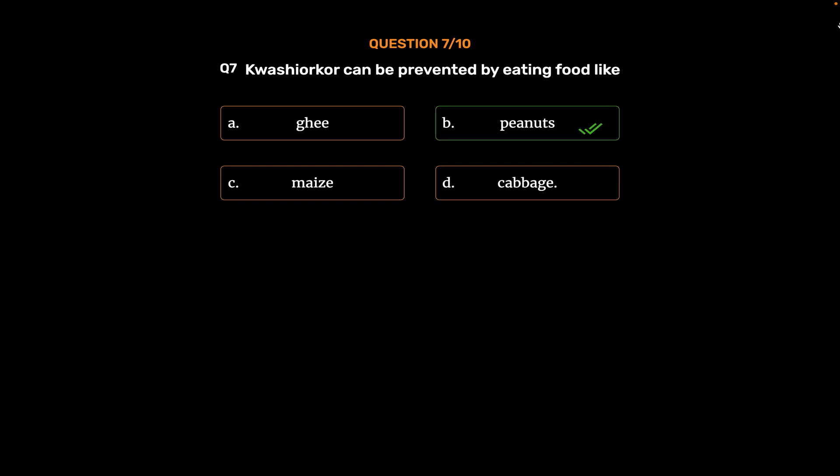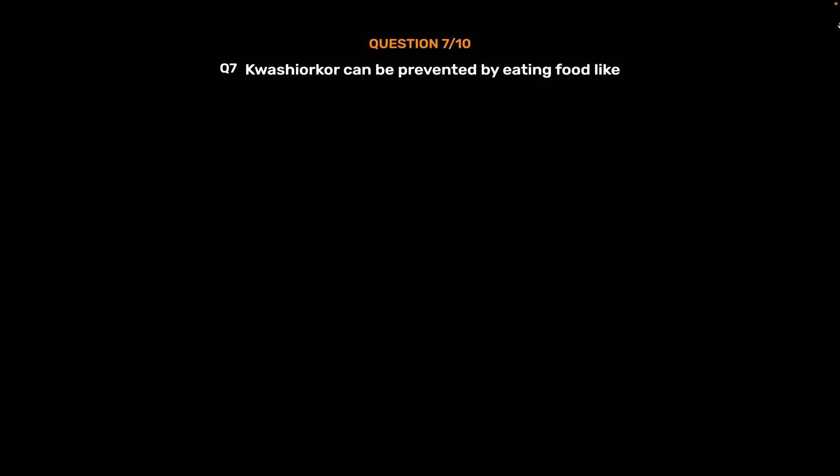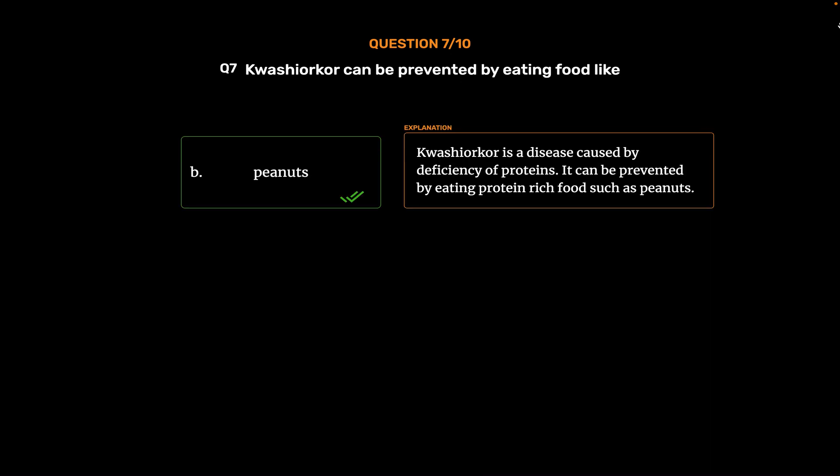Option B: Peanuts. Kwashiorkor is a disease caused by deficiency of proteins. It can be prevented by eating protein-rich foods such as peanuts.